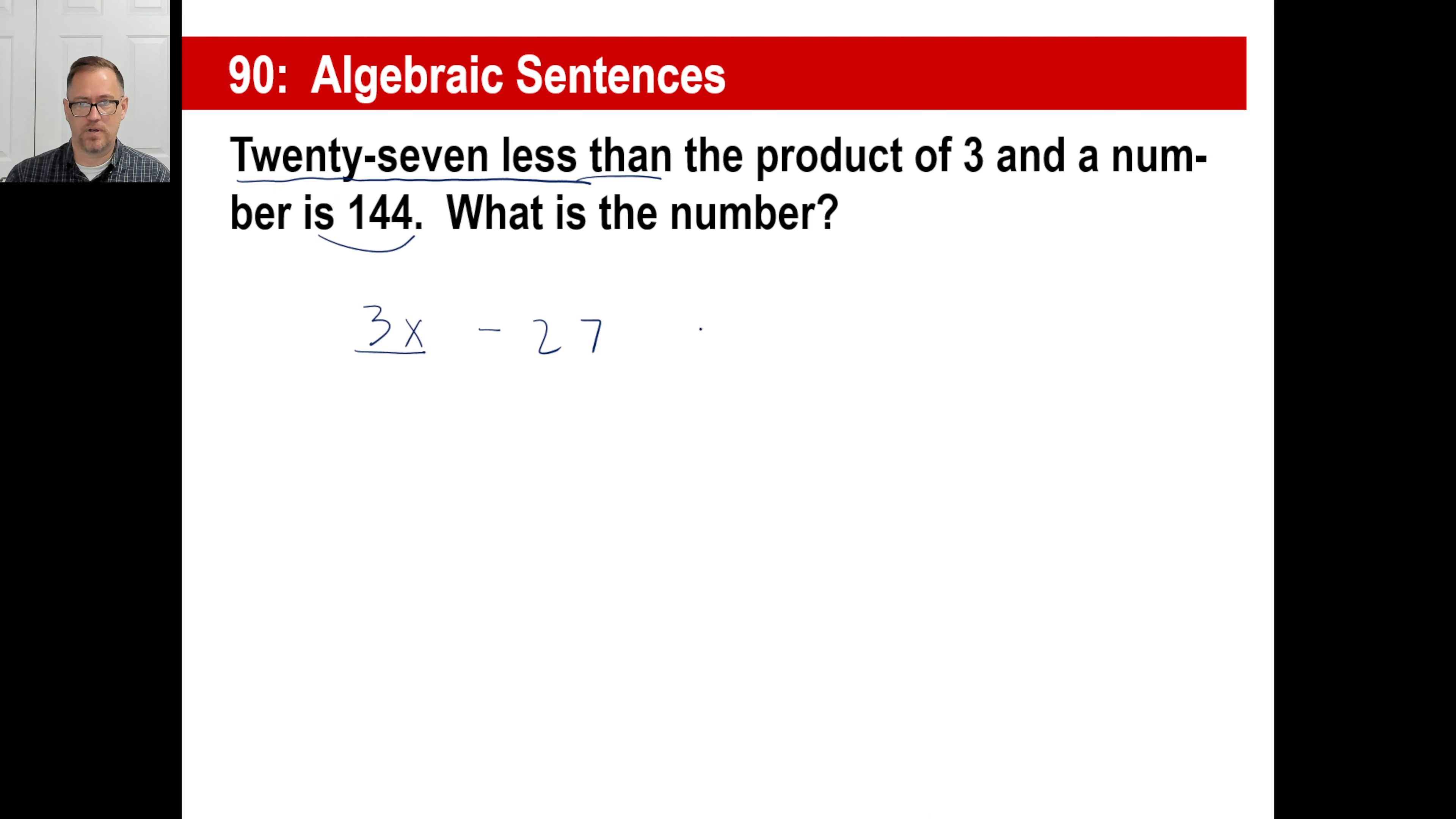So now I'm going to add my 27 here. Add my 27 there. 33x equals 171. And if you do the division, that's going to be 57. There you go. Dollars to it.